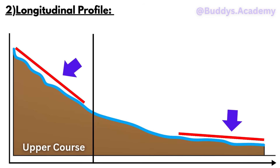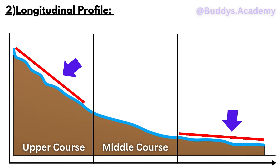Now remember, erosion is going to be the removal of whether it's rocks or soil, things like that. And once we get to the middle course, we're going to see that the gradient is going to be a bit more gentle. So that means that you're no longer going to have vertical erosion — you're going to have lateral erosion. And in this middle course, you're going to find your meanders, which are going to begin to form.